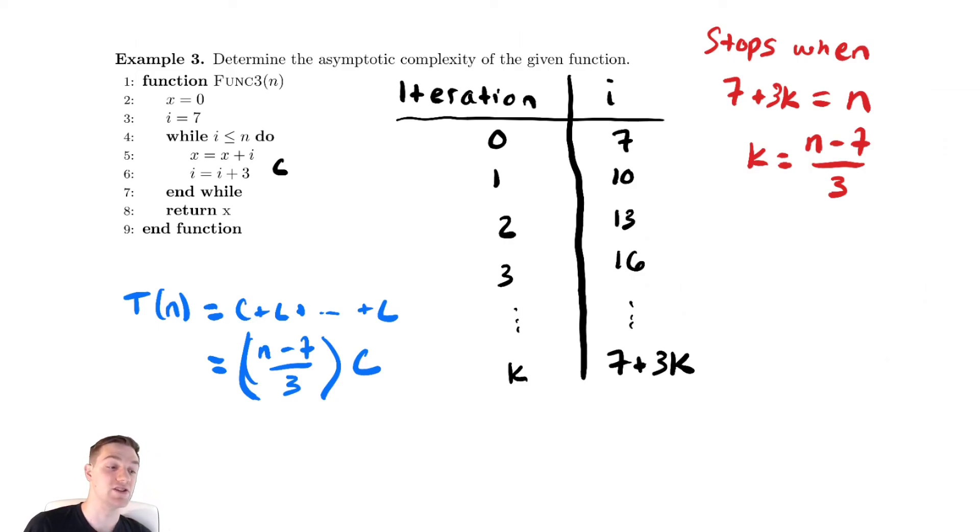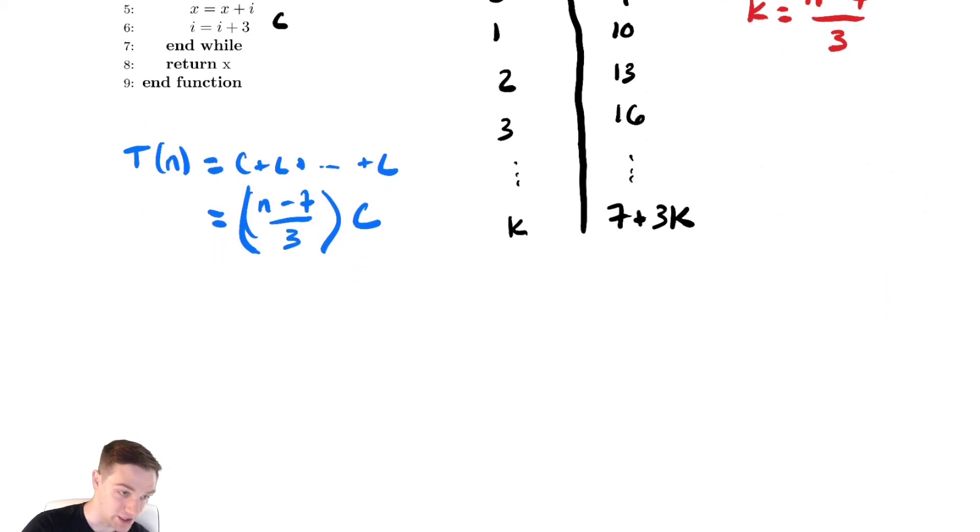So t of n is equal to n minus 7 over 3 all times c, which means that t of n is in theta of n.